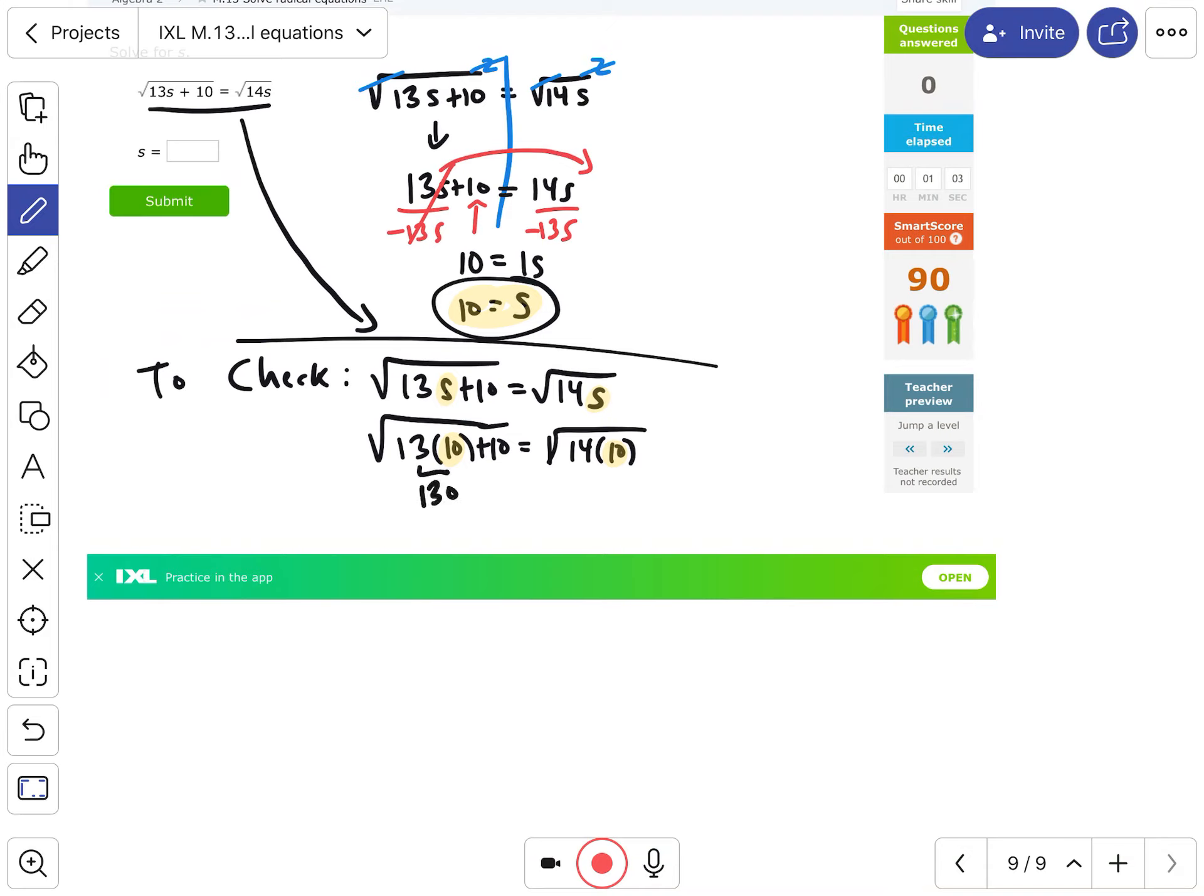So if I combine, let's see, that's going to be 130 plus 10, and that has a square root. 130 plus 10 is 140, so that's square root of 140 on the left. What does the right have? 14 times 10 is 140 with the square root. Okay, so square root of 140 equals square root of 140. Yes, that's true.